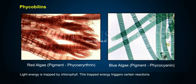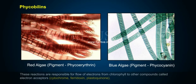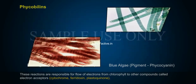Light energy is trapped by chlorophyll. This trapped energy triggers certain reactions that are responsible for the flow of electrons from chlorophyll to other compounds called electron acceptors, such as cytochrome, ferredoxin, and plastoquinone.